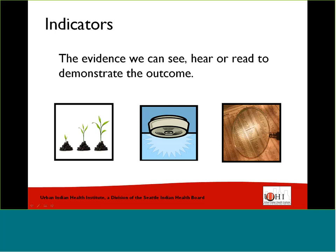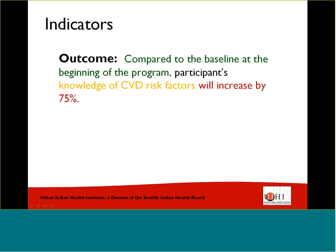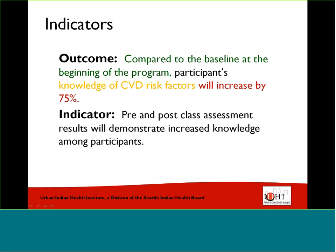Indicators are tangible so we can see, hear, or read them. There may be two or more indicators for each outcome. It's a good idea to think about what types of information you have access to or can easily collect when developing indicators. Our example program has very straightforward outcomes with indicators already implied. Our outcome statement is: compared to the baseline at the beginning of the program, participants' knowledge of CVD risk factors will increase by 75%. Our indicator is: pre- and post-test class assessments will demonstrate increased knowledge among participants. To measure this benchmark outcome for increased knowledge, we would conduct the same test before and after participation in the class to see if we had reached our 75% benchmark.